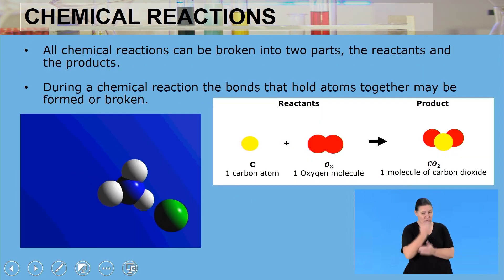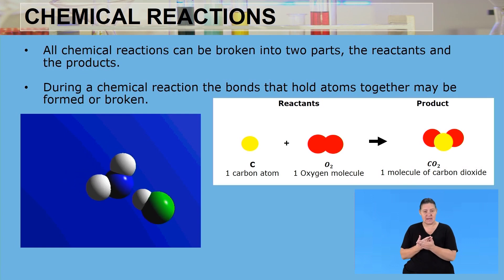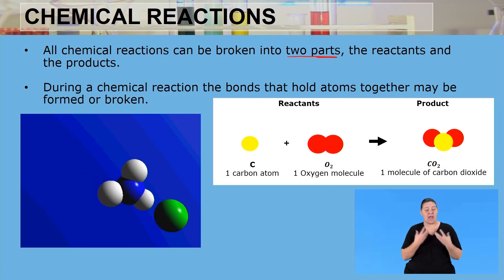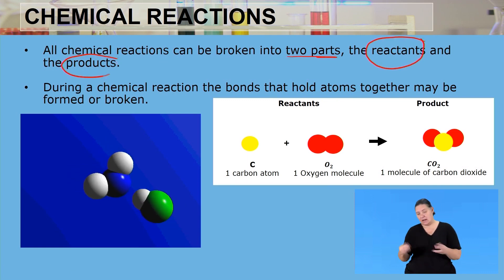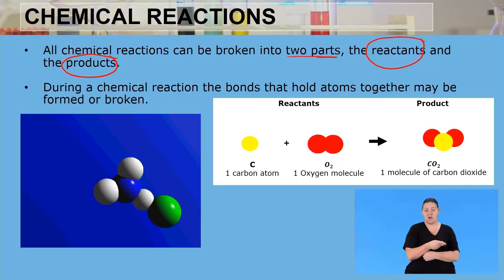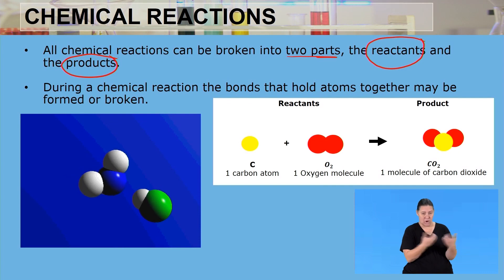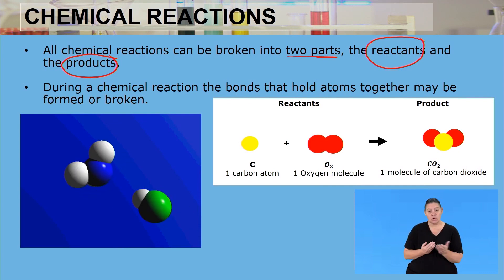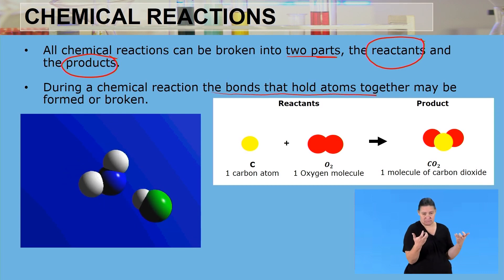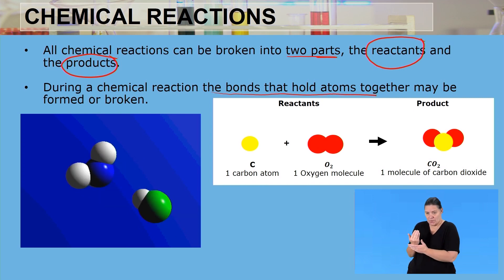All chemical reactions can be broken into two parts: the reactants and the products. What happens during a chemical reaction? The existing bonds of the reactants are going to break, and new bonds are going to be formed. During a chemical reaction, the bonds that hold atoms together may be broken, and new bonds will form when the product is being produced.